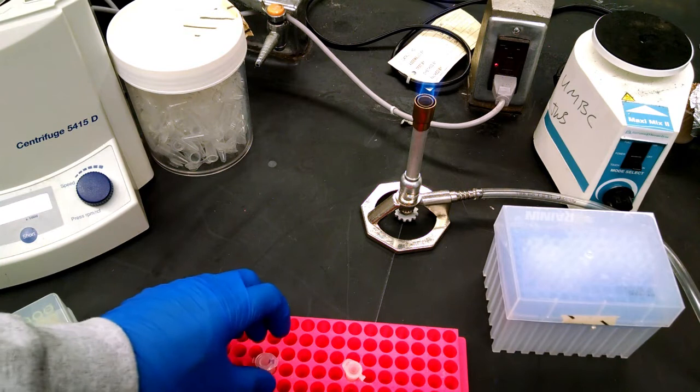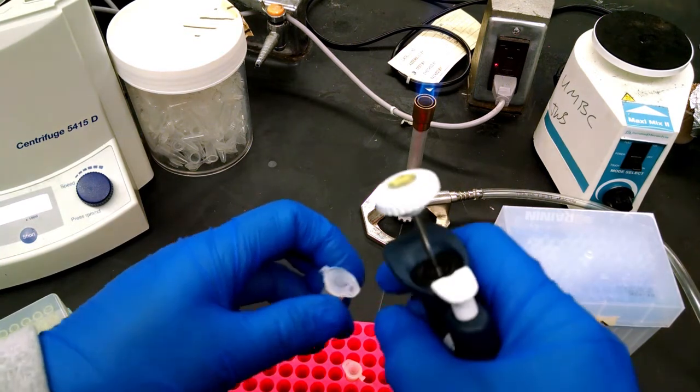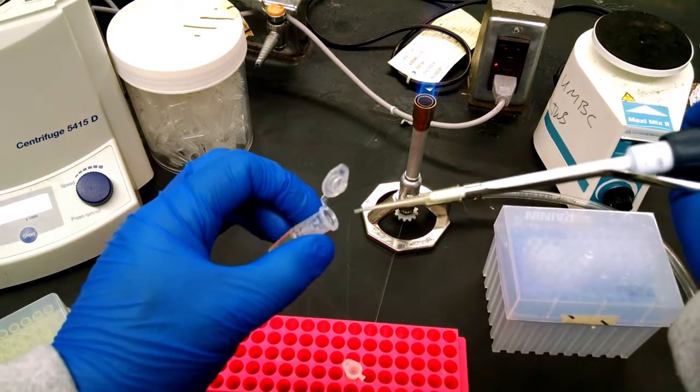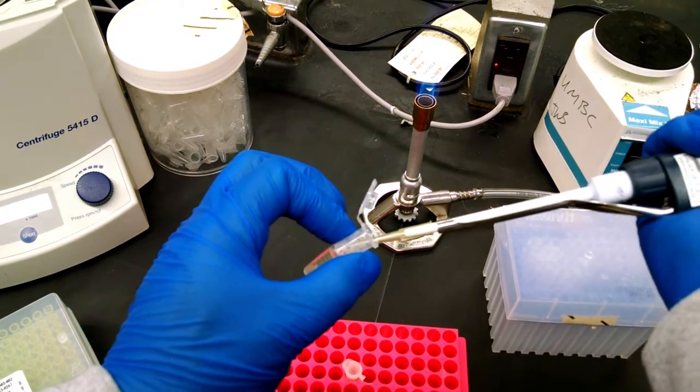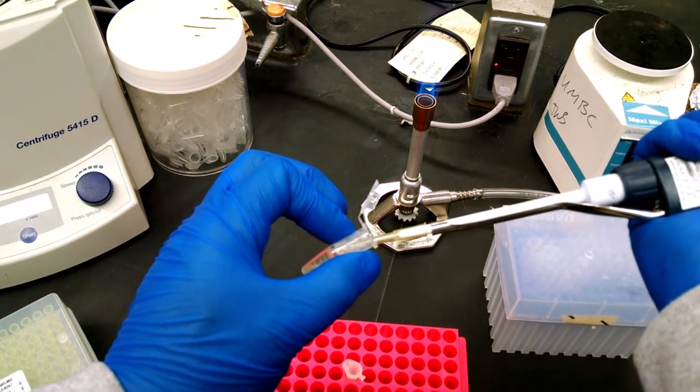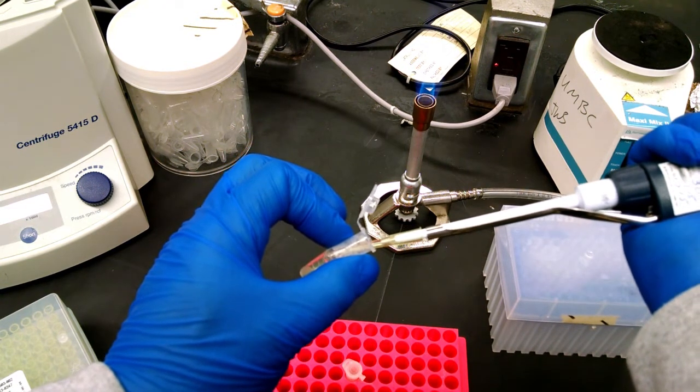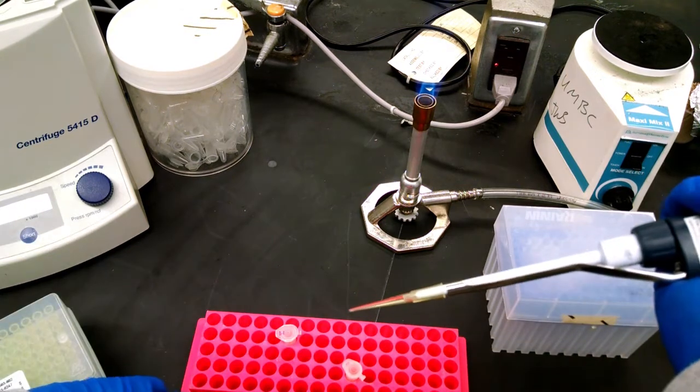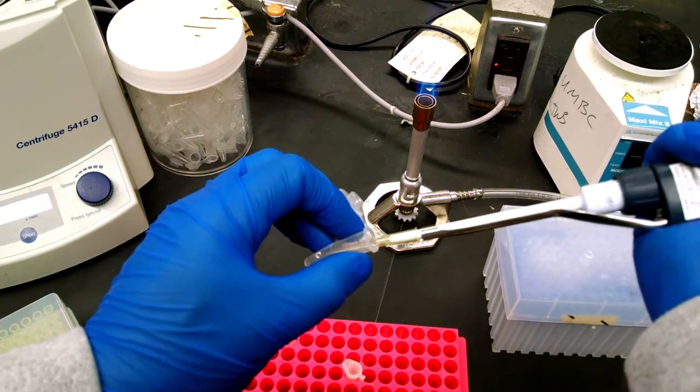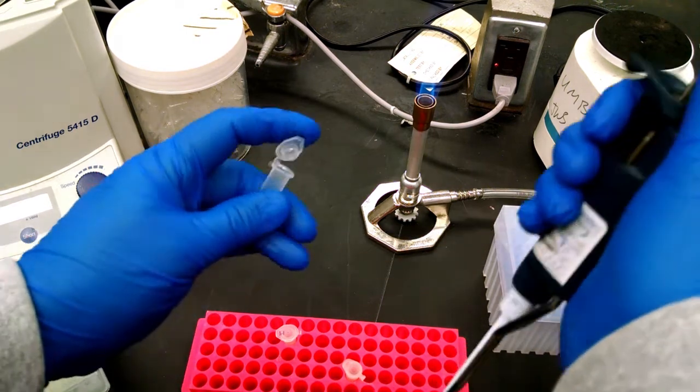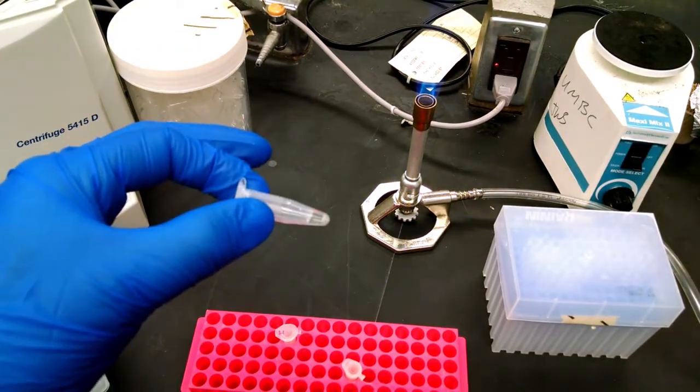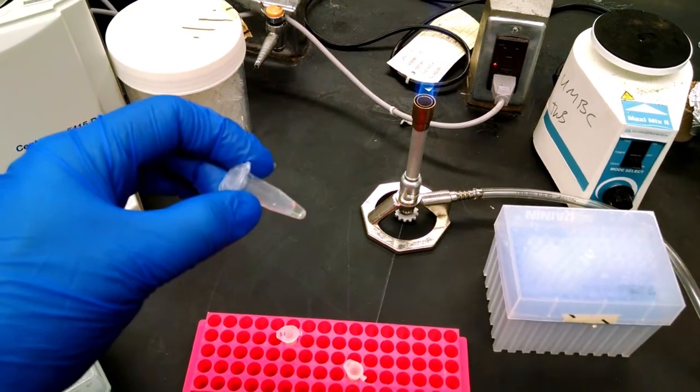And we will just very gently pop this open and we will just skim off the top 100 microliters. Make sure you're skimming it off the top very gently. We don't want any beads and we will put it in one of these brand new tubes and now you have 100 microliters of Arabidopsis DNA from your mutant.